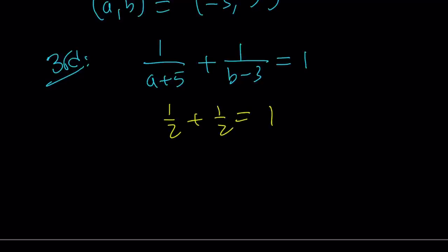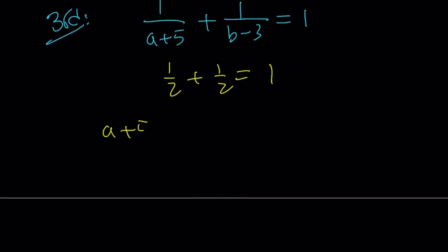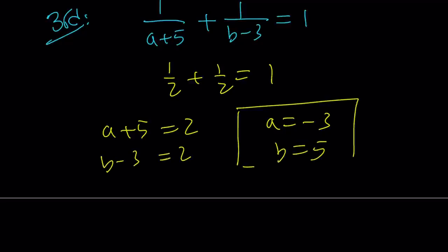That's it. All right, great. From here, we get a plus 5 is equal to 2, which means a is negative 3. And if b minus 3 is equal to 2, we get b equals 5. And those are the solutions, as you know.